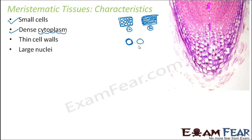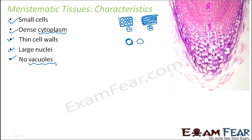The next characteristic is large nuclei. The nucleus plays the most important role in cell division, as it contains the centromere, chromatids, and genes. Since cell division is the primary purpose of meristematic tissue, the nucleus is quite large. Additionally, vacuoles are absent because vacuoles are organelles used for food storage, and since the function here is cell division rather than storage, vacuoles are not needed.